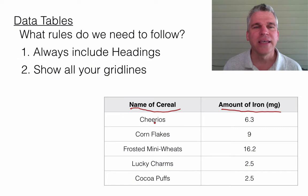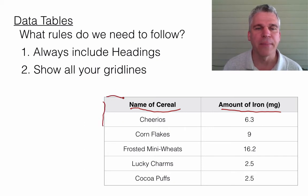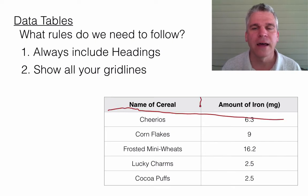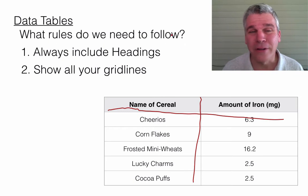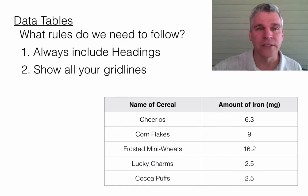The other thing to notice is that all of our grid lines are present. These grid lines are the lines that make up the top and the bottom and the sides — these are all grid lines here. Make sure that you have all of them. Some people in the past might just want to make a line here and a line here and then make their table, and that's not going to cut it. Make sure that you have all of your grid lines present.